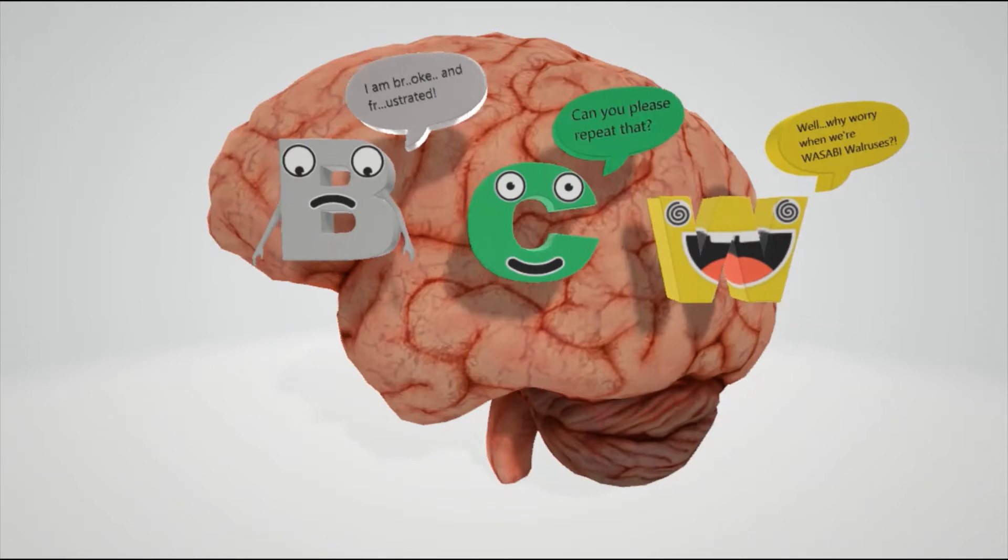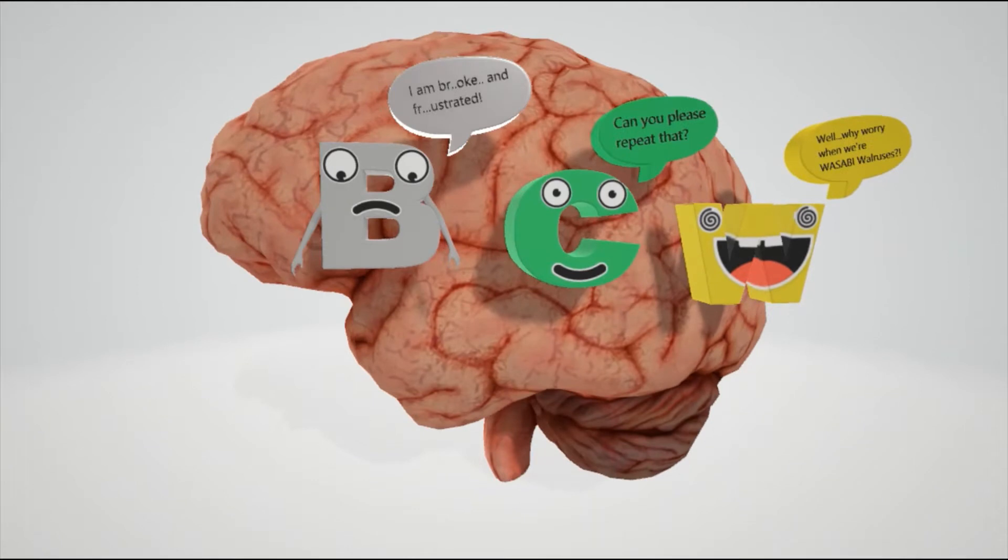Let's start with Broca's aphasia. Broca's area is in the inferior frontal gyrus of the frontal lobe. That's why this B character is in the frontal lobe. He's saying 'I am broke and frustrated.' In Broca's aphasia, where Broca's area is affected, the speech is broken.